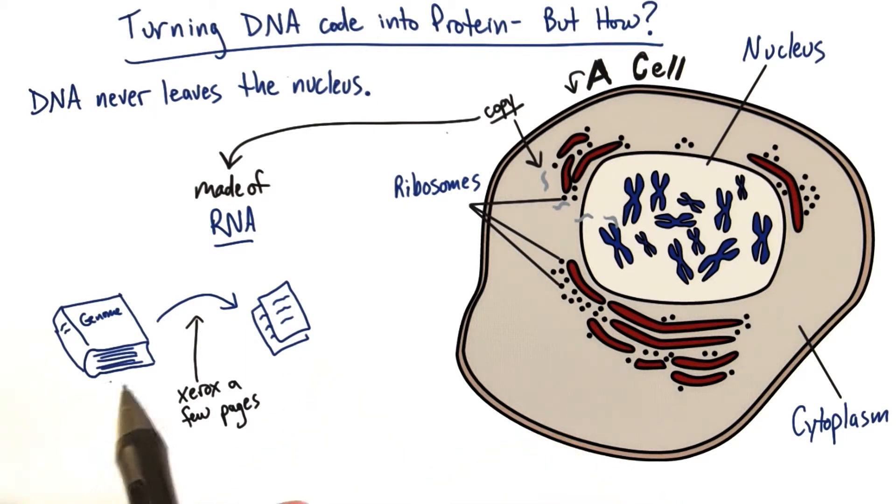Obviously we don't need the whole genome to make one protein, but there are sequences of information that are necessary to make up individual proteins. And we just want to make copies of what we need and bring them out to the cytoplasm to read.